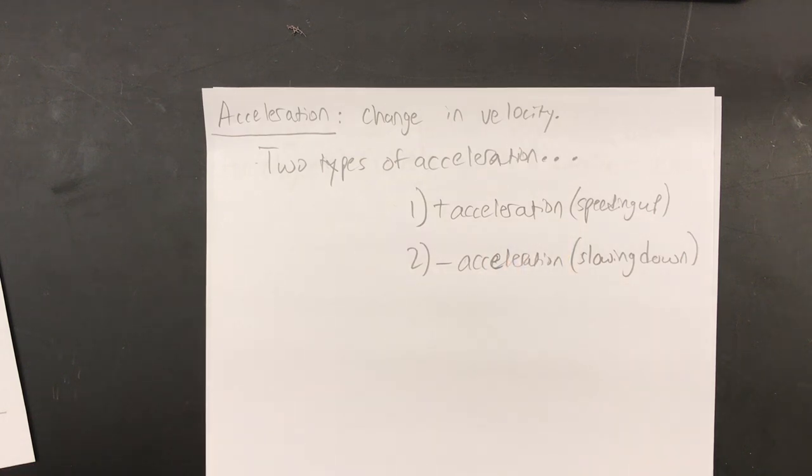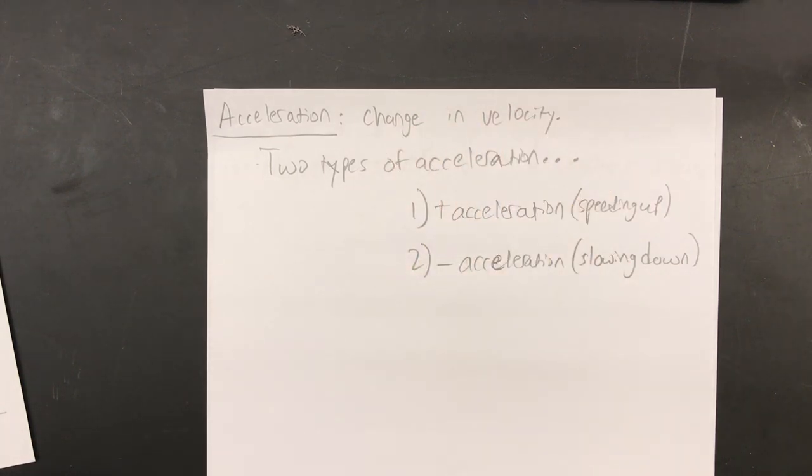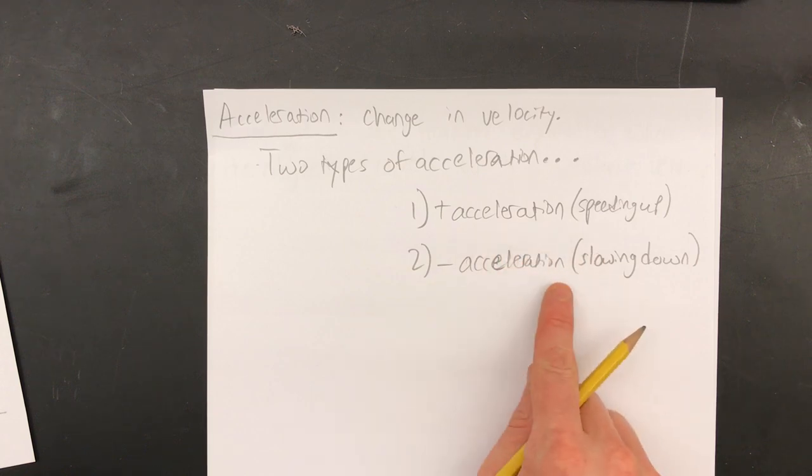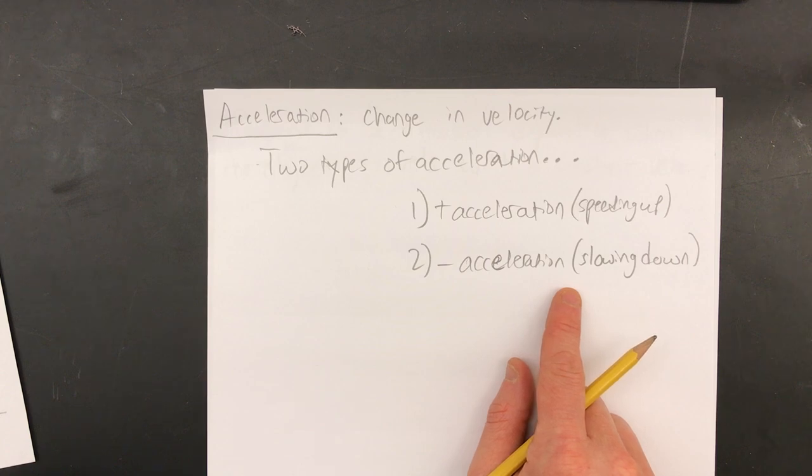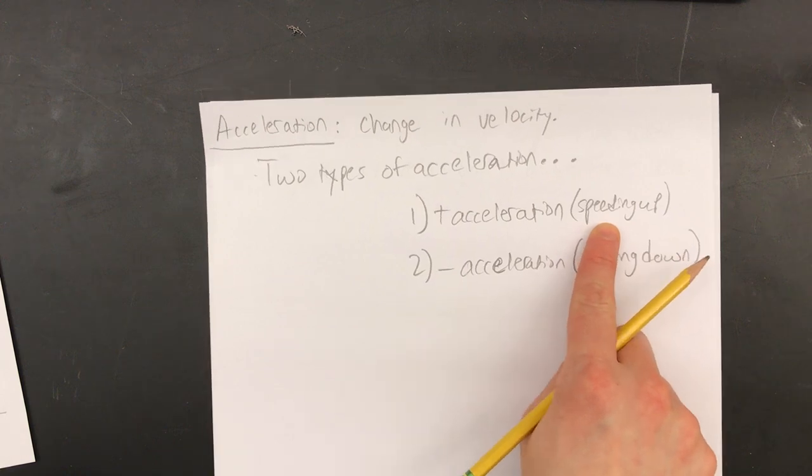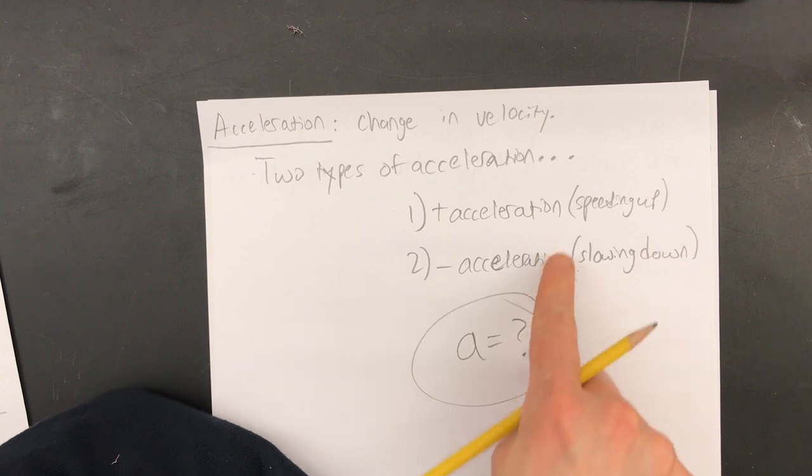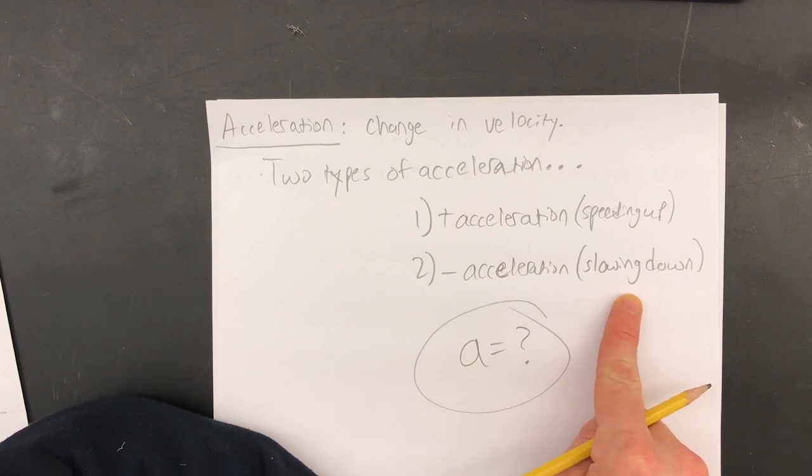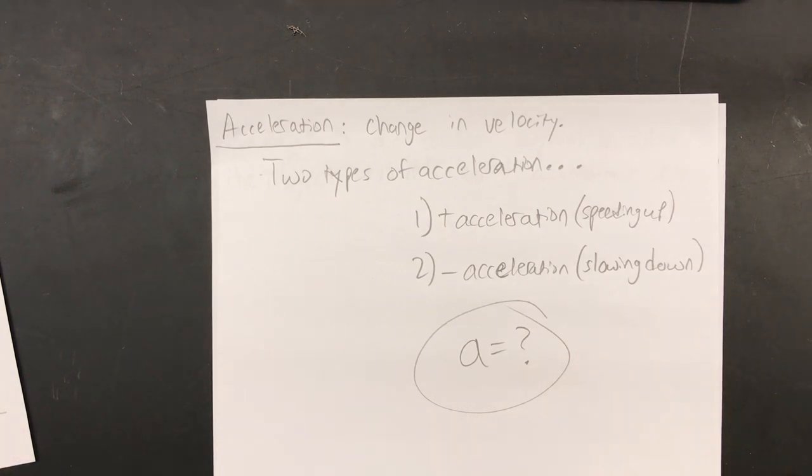But there are really two types of acceleration. Speeding up is one that you know already. But today, what I really want you to know is that slowing down is also a kind of acceleration. Because slowing down is another kind of change in velocity. It's just a negative change. Speeding up is where what's on the speedometer increases, it is a positive change. Slowing down is when what is on the speedometer decreases, it is a negative change. But it is still a change. And you have to know that in physics, slowing down is acceleration too, not just speeding up. So if you were to calculate A for acceleration, you would get a positive number when a car speeds up. But if a car is slowing down and you calculate acceleration, you would get a negative number. That's why we call it negative acceleration.